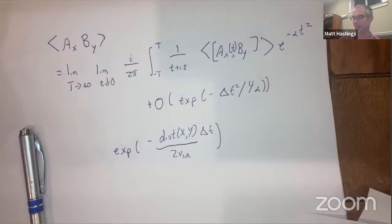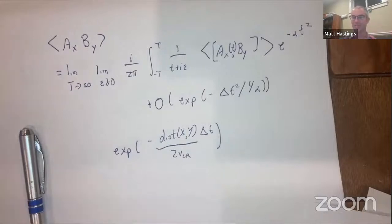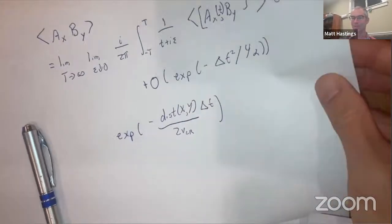More has been achieved using these ideas, all using the same basic concept: an expression has some singularity, the spectral gap allows you to smooth it out, then you Fourier transform back to real time and exploit the Lieb-Robinson bound. One result obtained along this line was the proof of the higher dimensional Lieb-Schultz-Mattis theorem, and a key technical trick introduced was quasiadiabatic continuation.